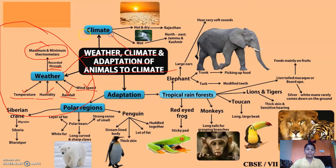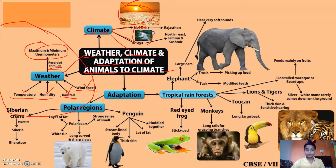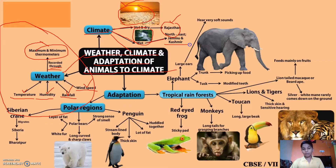Now let's come to climate. Climate can be of two types: it can be hot and dry climate, or it can be wet. Hot and dry climate is found in Rajasthan and north-east Jammu and Kashmir, while wet climate is found in Jammu and Kashmir.